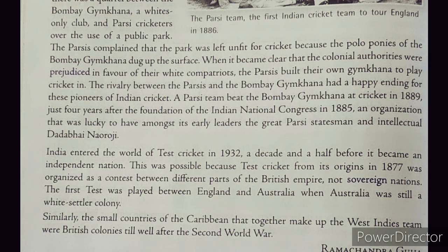India entered the world of test cricket in 1932, a decade and a half before it became an independent nation. This was possible because test cricket, from its origin in 1877, was organized as a contest between different parts of the British Empire, not sovereign nations. The first test match was played between England and Australia when Australia was still a white settler colony. Similarly, the small countries of the Caribbean that make up the West Indies team were British colonies well after the Second World War.